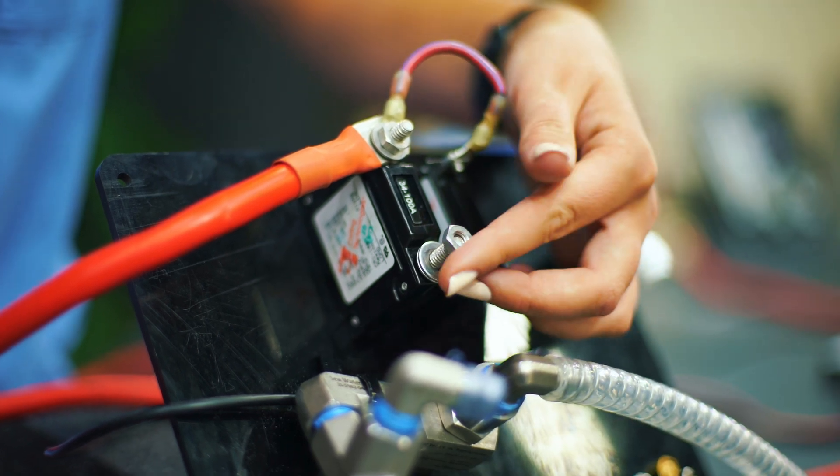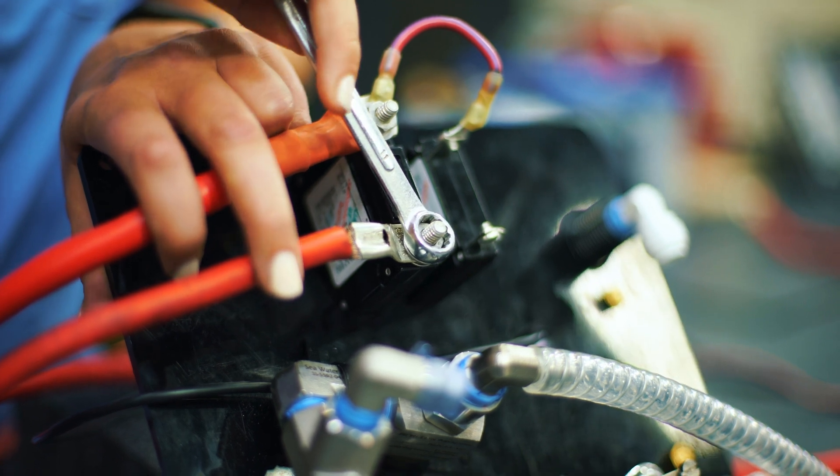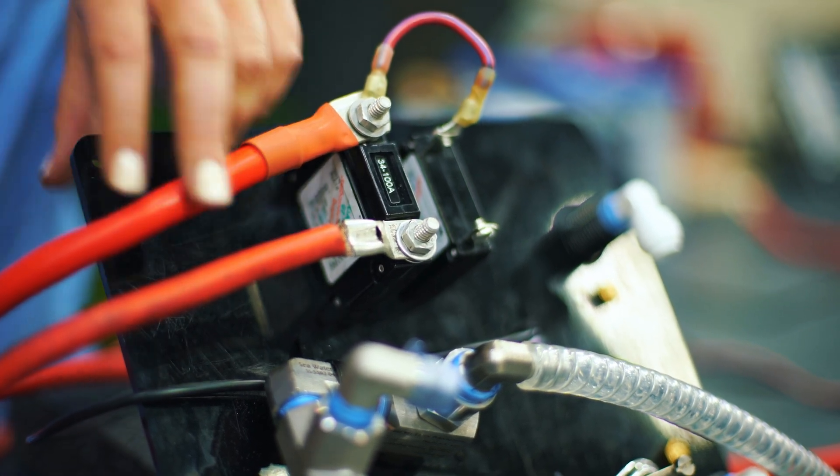We will then attach the positive connection from the motor to the bottom of the main breaker by securing it between the washers and nut, just as we did for the top.